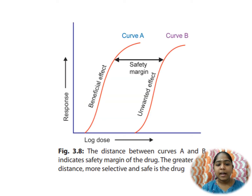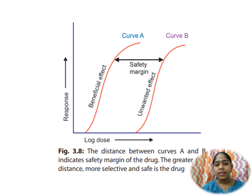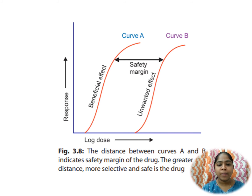The drug response curve showing the beneficial effect and the unwanted effect — the difference between the unwanted effect and the beneficial effect is referred to as the therapeutic index, or the safety margin.